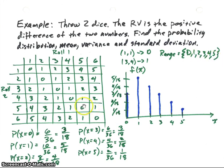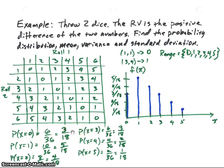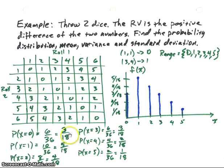Now let's find the probabilities of each value — those will be our distribution function values. The probability of zero: we count up all the zero values along the diagonal, there are six of them, so six over 36, which is three-eighteenths. The probability of X equals one — there are 10 ones across both diagonals — so ten thirty-sixths, or five-eighteenths. Then four-eighteenths, three-eighteenths, two-eighteenths, and one-eighteenth for values two through five.